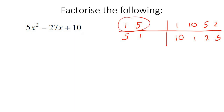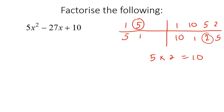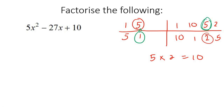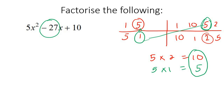Now you choose a number from the first column and a number from the second column. In the beginning you're not going to be very good at knowing which number to choose, and that's okay. Let's choose a random number. Multiply them together — that gives you 10. Then look at the opposites: choose the partner of the first number and the partner of the second number, and multiply those two, which is 5 times 1, giving you 5. Now look at these two numbers: could 10 and 5 ever give you minus 27? Definitely not. So we've chosen the wrong numbers and we start over.